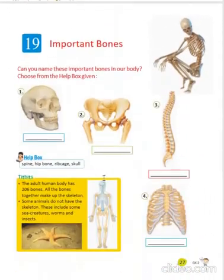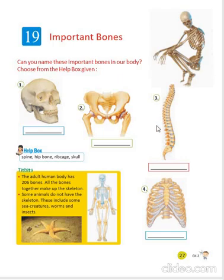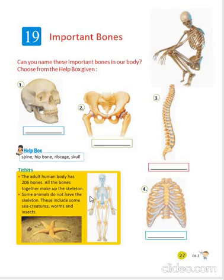Now come to Chapter 19. We have to guess the name of these different important bones in our body. This is the hip bone. This is the rib cage. This one is the spine. And this one is the rib cage. Do you know how many bones are there in an adult human body? We have 206 bones, and all these bones together make up the skeleton.